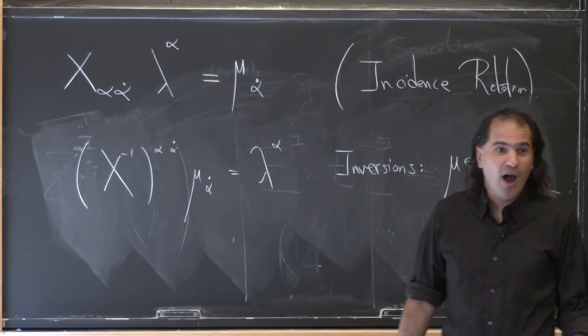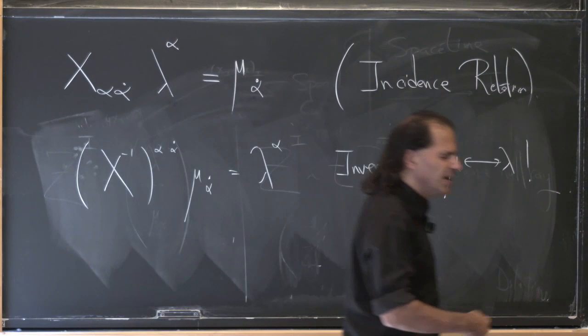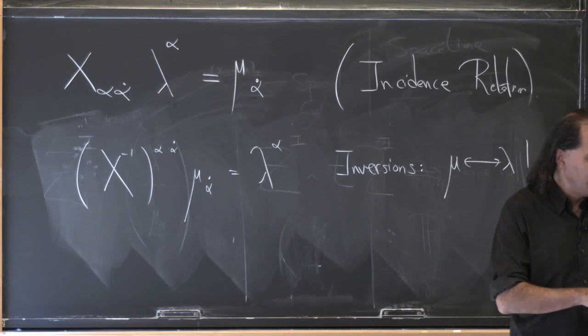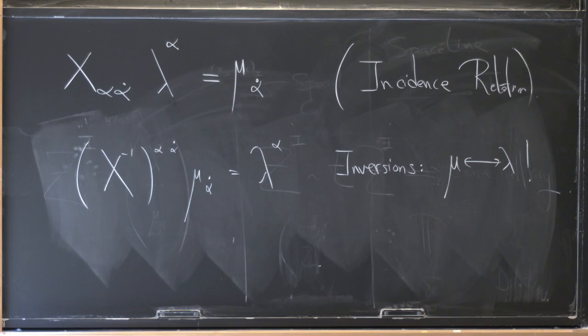And since we know that translations and everything else are just linear transformations, that tells us that the special conformal transformations are linear transformations on mu and lambda too. And of course, where are they? They are right up there in that block. So it's paid off — we decide to talk about null rays, and we see that null rays are associated with these four-vectors, modulo rescaling, so they really live in P3.